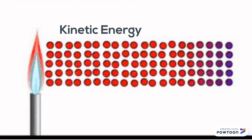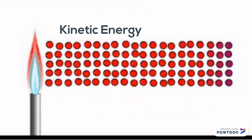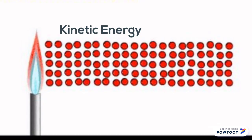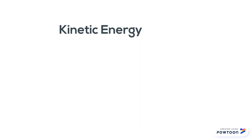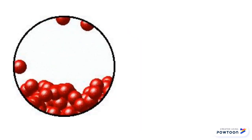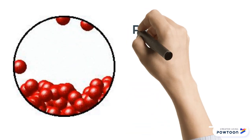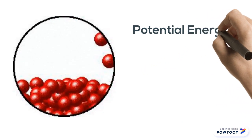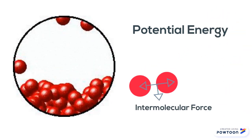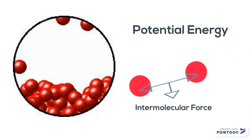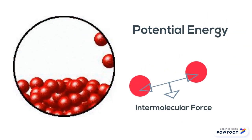However, at some point they'll have so much kinetic energy that they're actually going to start storing some of it — this will be potential energy. Where is it stored? It's stored in the stretched bond between the particles.